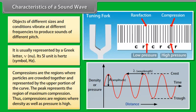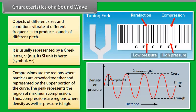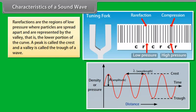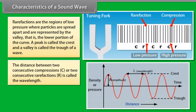Compressions are regions where density as well as pressure is high. Rarefactions are the regions of low pressure where particles are spread apart and are represented by the valley, that is, the lower portion of the curve. A peak is called the crest and a valley is called the trough of a wave. The distance between two consecutive compressions or two consecutive rarefactions is called the wavelength. The wavelength is usually represented by a Greek letter Lambda. Its SI unit is meter M.